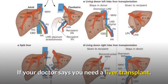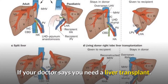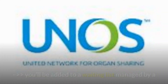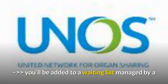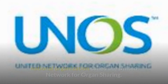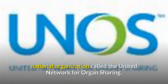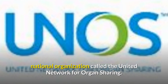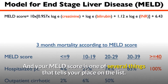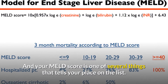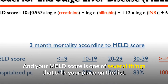If your doctor says you need a liver transplant, you'll be added to a waiting list managed by a national organization called the United Network for Organ Sharing. Your MELD score is one of several things that tells your place on the list.